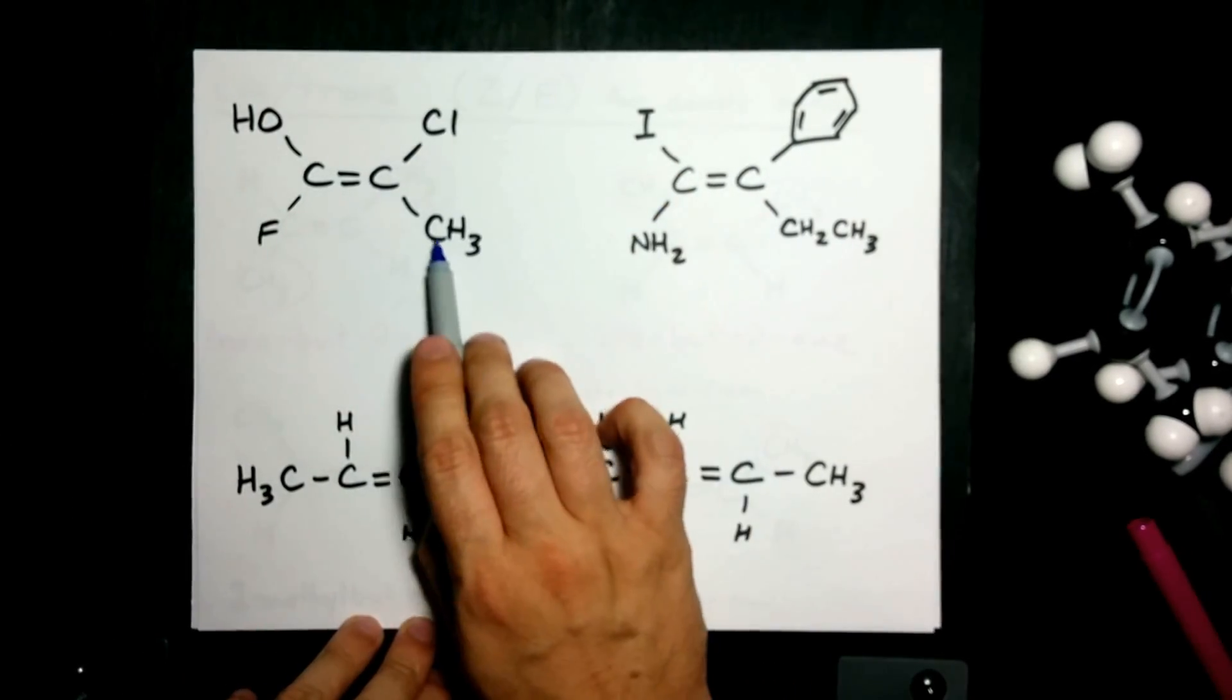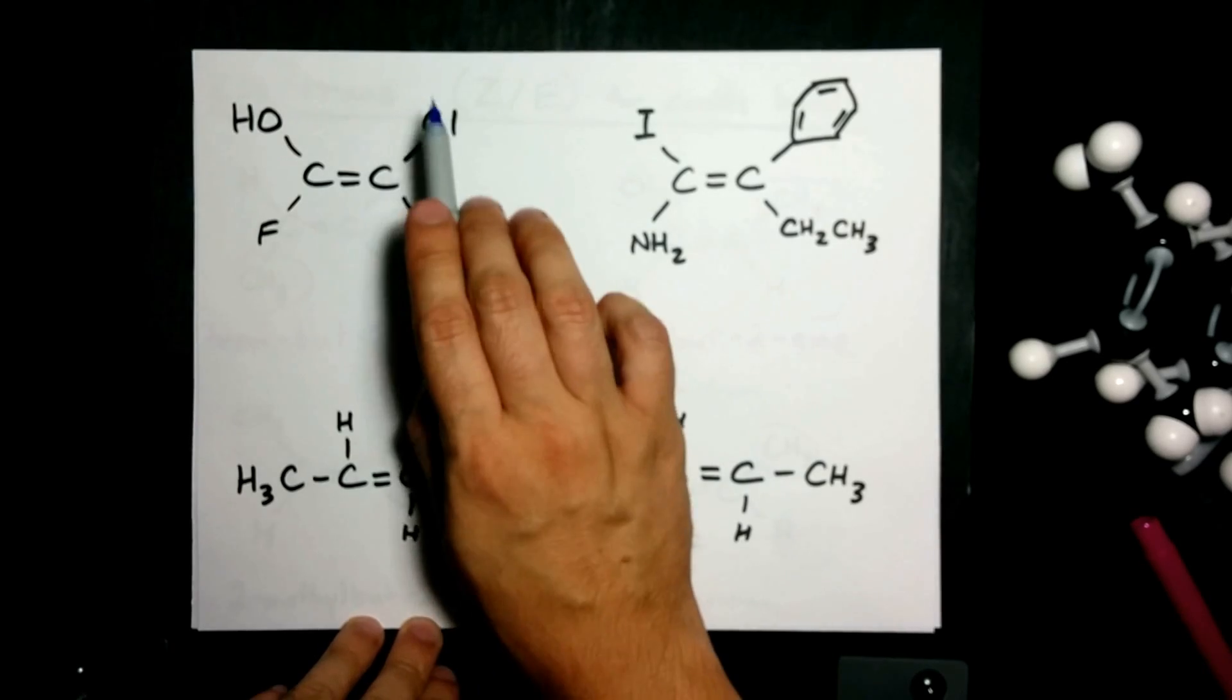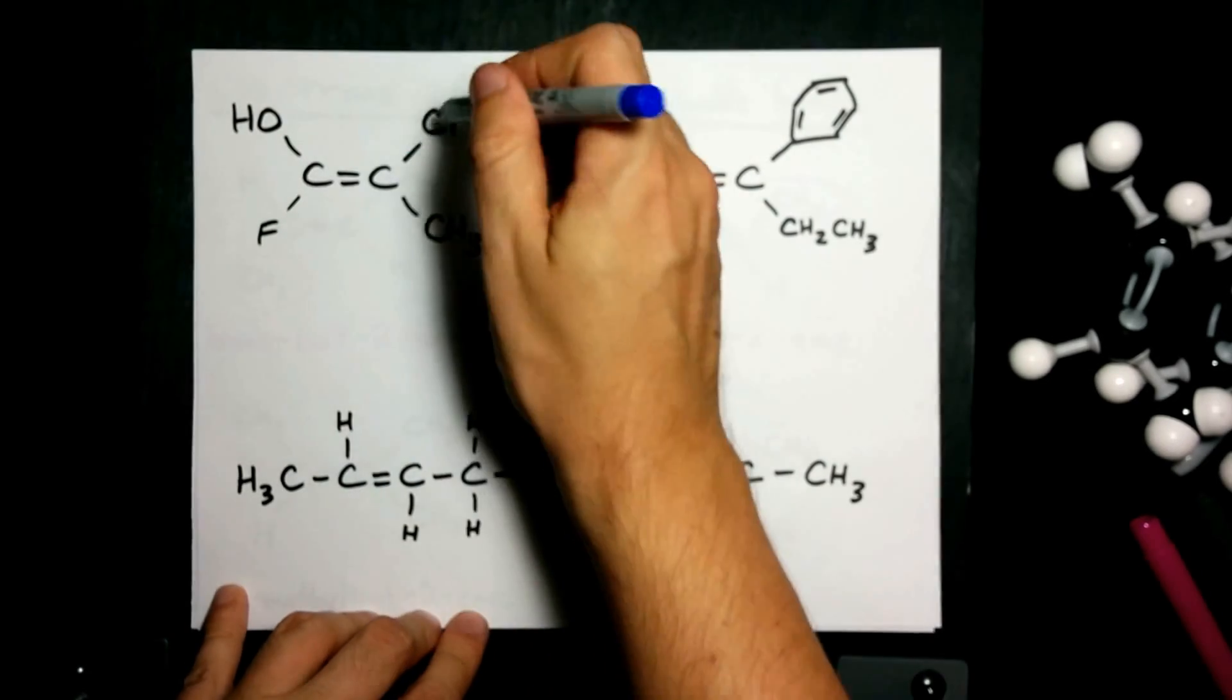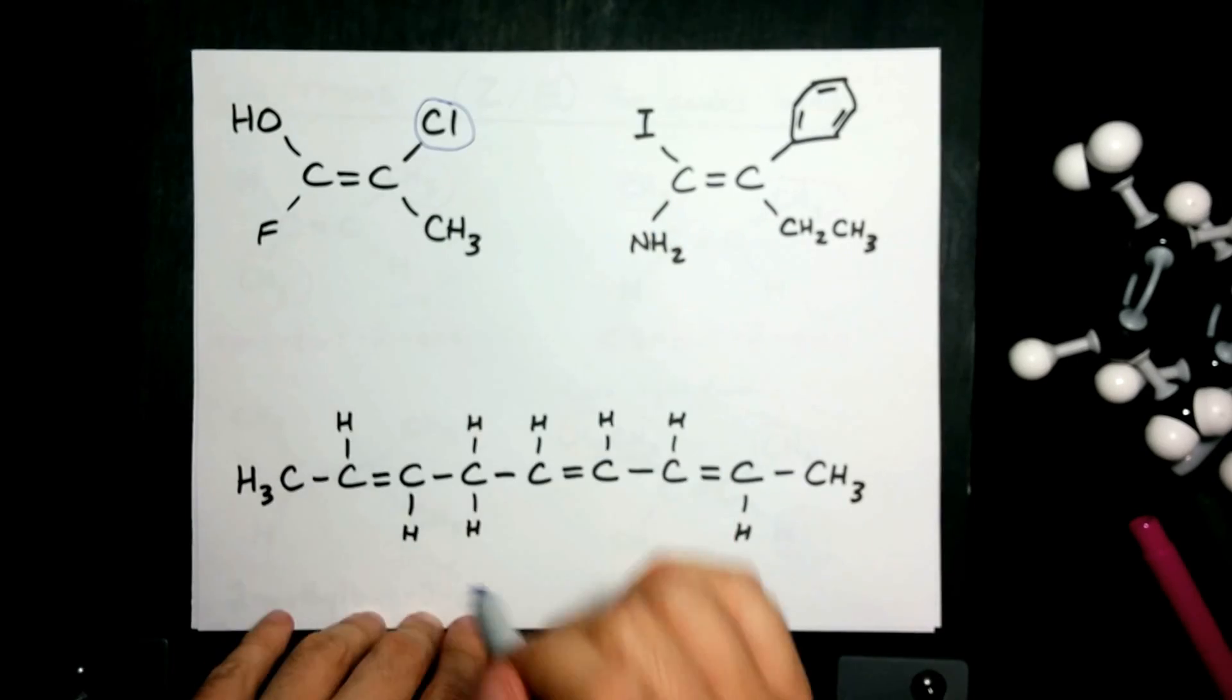Which groups get precedence? This carbon is connected to a carbon and a chlorine. Carbon weighs 12. Chlorine weighs 35. Chlorine wins.